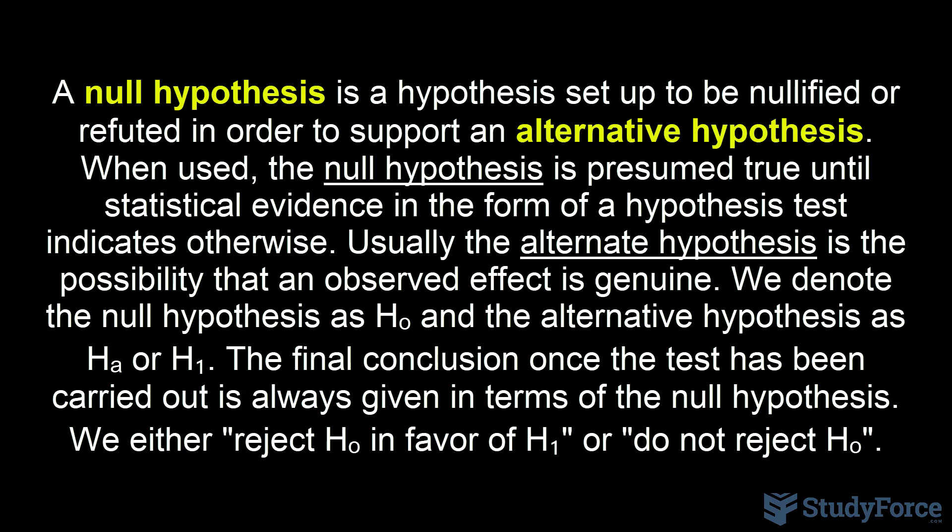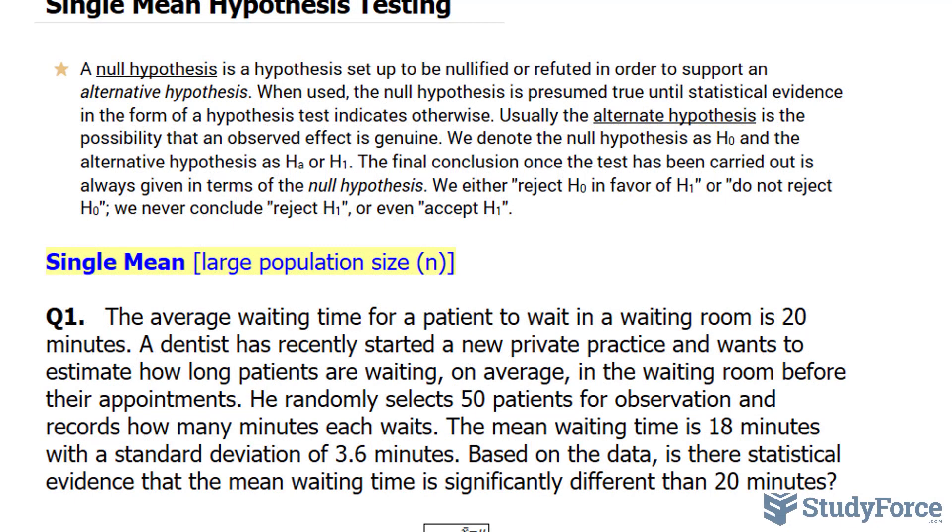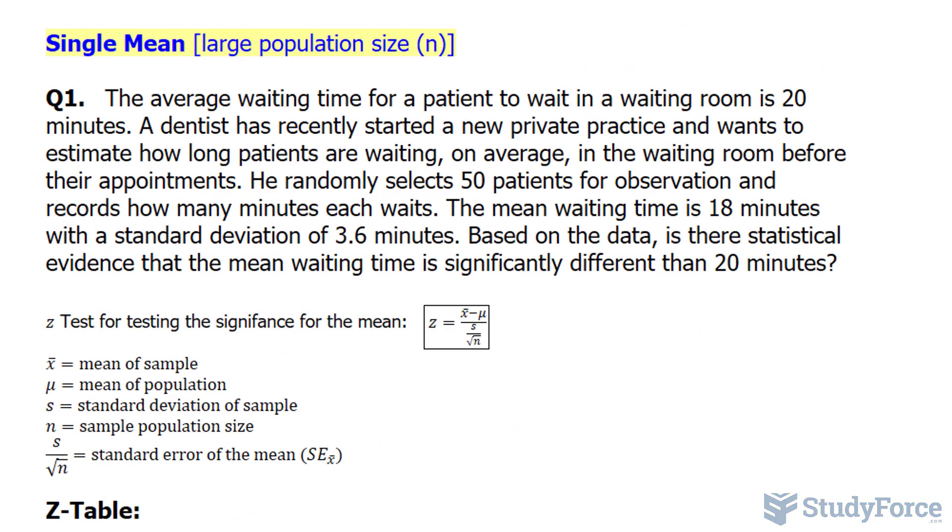We denote the null hypothesis as H₀ and the alternative hypothesis as Hₐ or H₁. The final conclusion, once the test has been carried out, is always given in terms of the null hypothesis. That is, we either reject H₀ in favor of H₁ or do not reject H₀. With that being said, the first question reads: